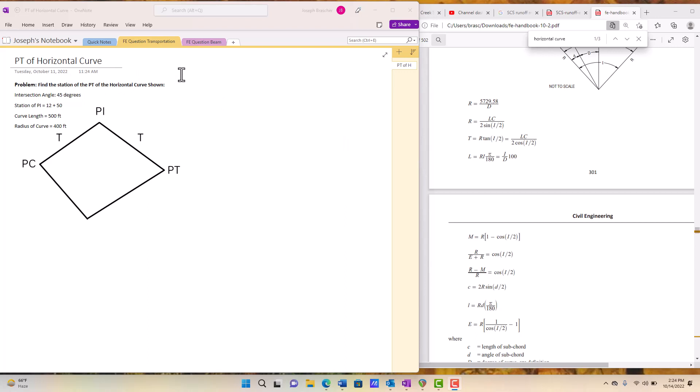We have an intersection angle of 45 degrees, the station of the PI is 12 plus 50, the curve length is 500, and the radius of curve is 400 feet.